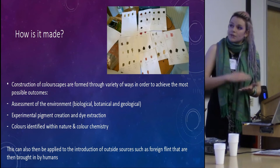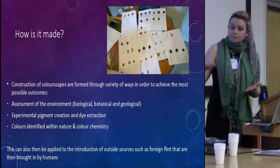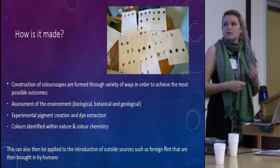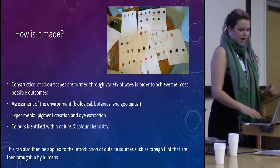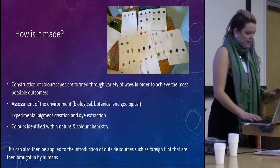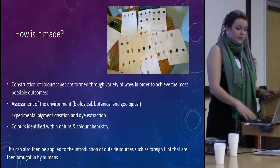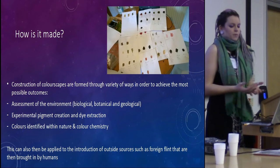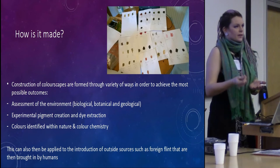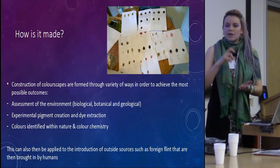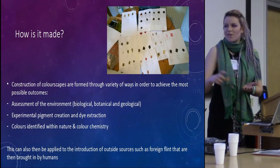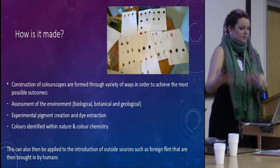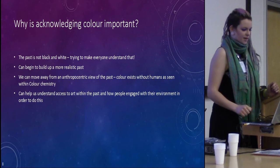Then looking at colour chemistry — so the assessment of how animals negotiate colour to present different aspects, such as warning and mimicking. We can also look at outside sources: what's being brought into this colourscape. So people in archaeology trading flint — everyone's been on a site where you've had this beautiful bright red flint that's not natural — bringing these colours into the immediate landscape.